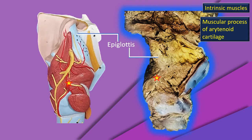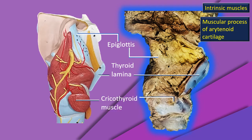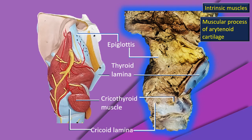Next, the thyroid lamina cut edge — note the pearly blue appearance also in the specimen. Next, the cricothyroid muscle: in the model it is clearly shown, but in the specimen a large part has been removed to expose the cricoid ring, so only a small cut edge is visible. Next, the cricoid lamina is rather well seen in both, but in the specimen it is covered by the posterior cricoarytenoid muscle.